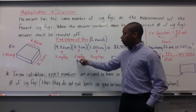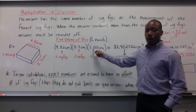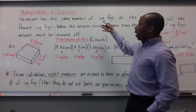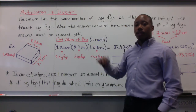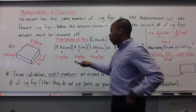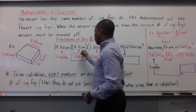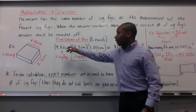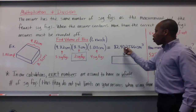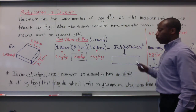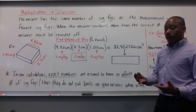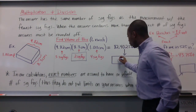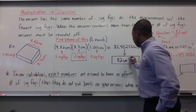In my width, I have two significant figures. My height, I have four significant figures. The rule says the answer has the same number of significant figures as the measurement with the fewest significant figures. The fewest significant figures is two, so our final answer can contain no more than two significant figures. Once we multiply all these quantities together, we get 82.402566 cubic centimeters, which rounds to 82 cubic centimeters.